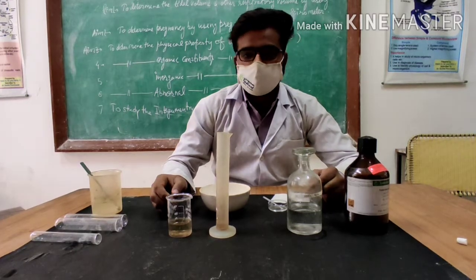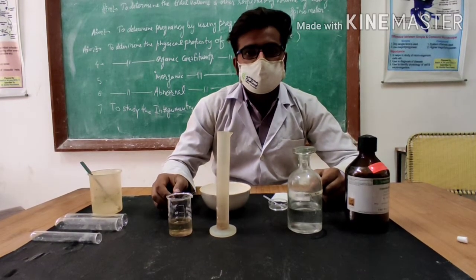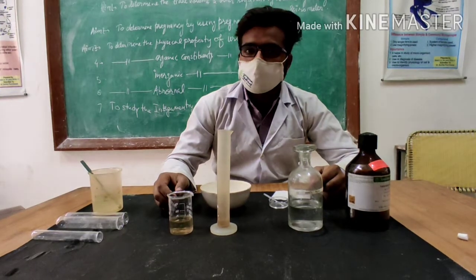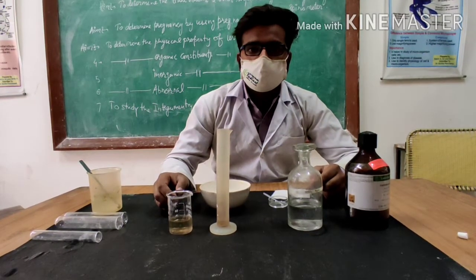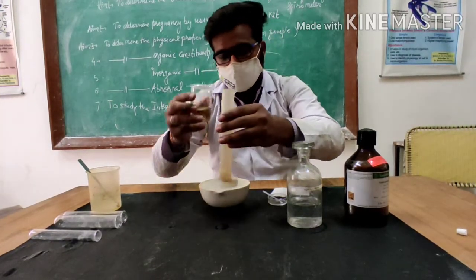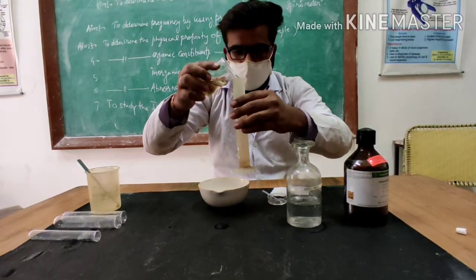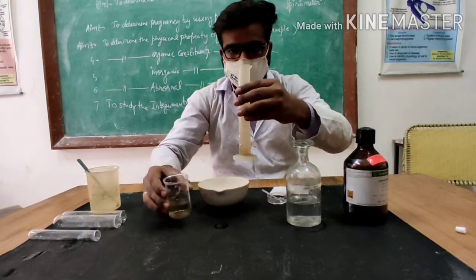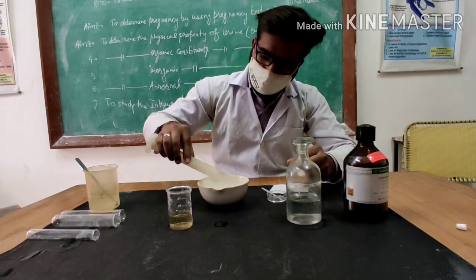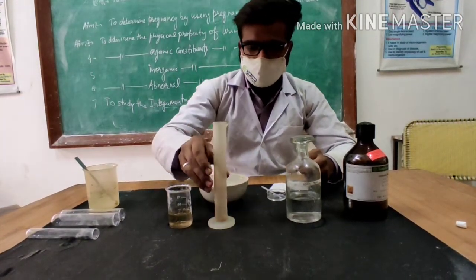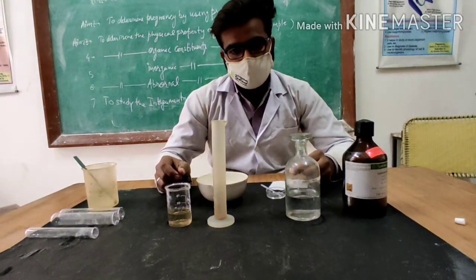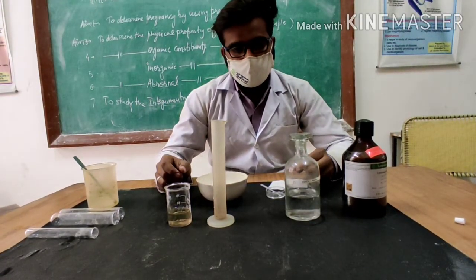The first test is for the determination of uric acid in the given urine sample. In this experiment, firstly we will add 5 ml of urine in a porcelain dish. After that, we will add 2 drops of concentrated HNO3.